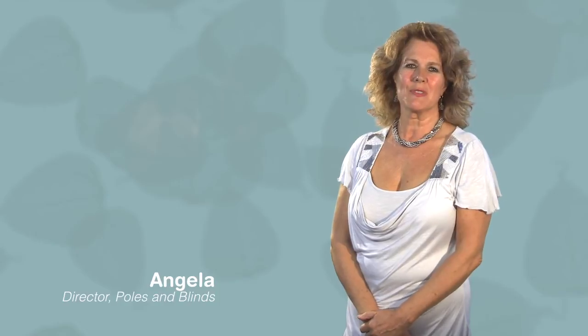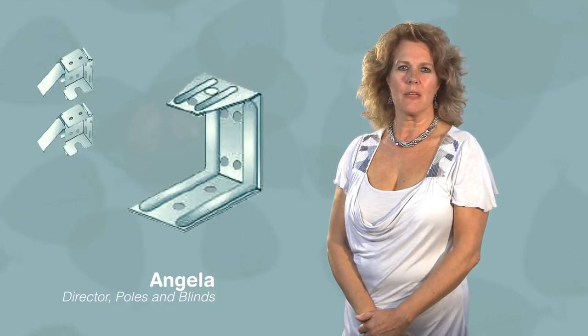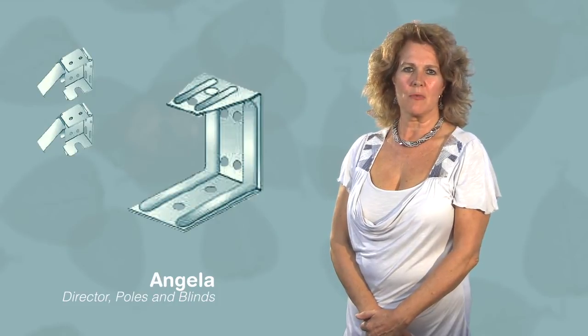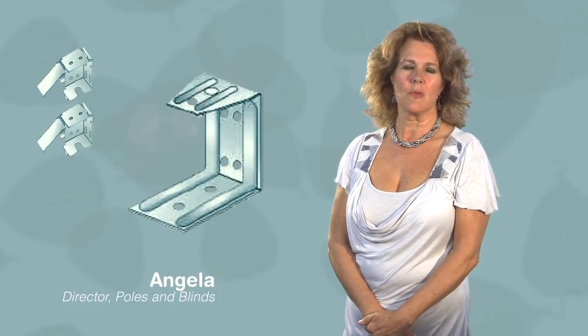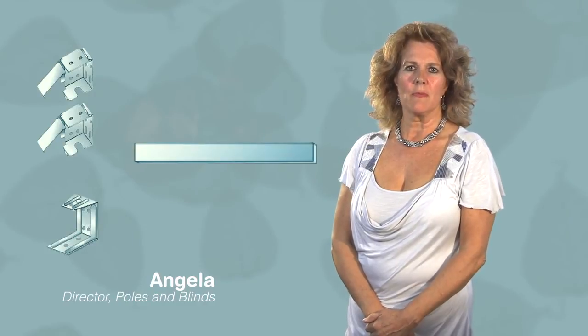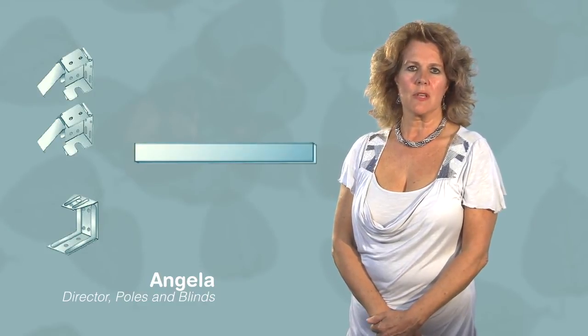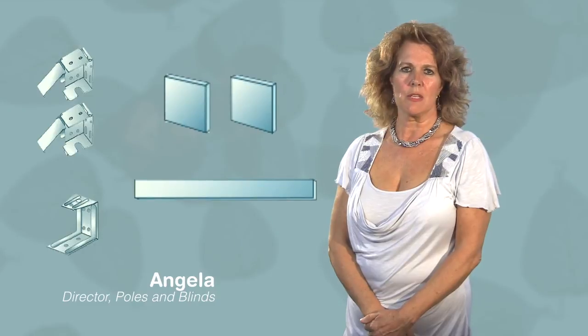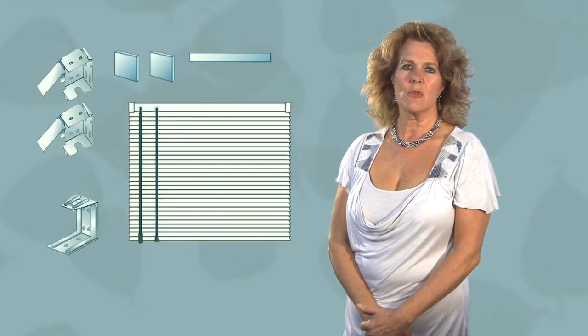When fixing your wooden venetian blind, you should have in your box a pair of end brackets, one centre support bracket, you may or may not have one of these brackets as it depends on the width of the blind, one matching fascia, if you're fitting your blind outside the window you should also have matching end covers, and of course your blind.